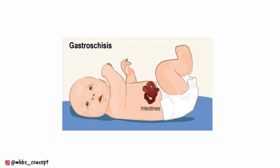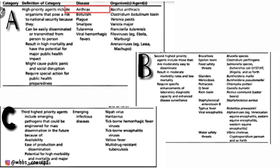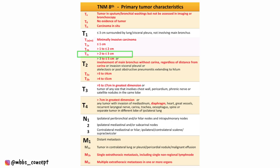There was one question in which a history of intestinal loop coming out was given, and in the options it contained gastroschisis, so I think that was the answer. Then there was a question on bioterrorism, asking which agent is used as a category A bioterrorism agent, and Bacillus anthrax was an option.